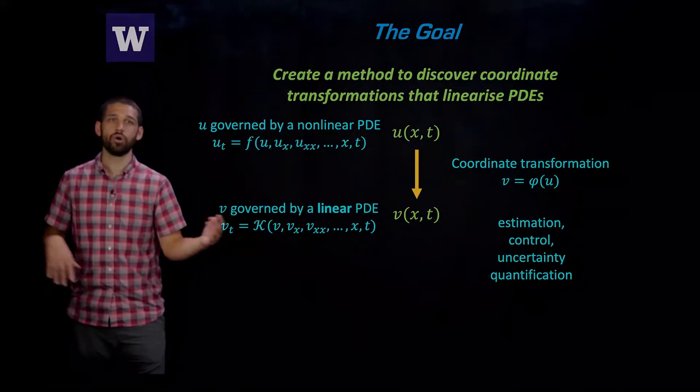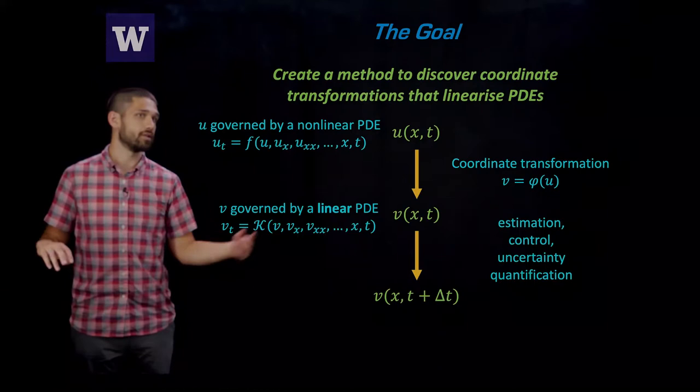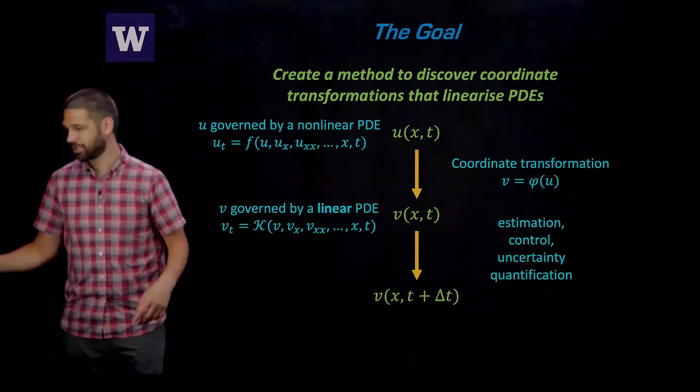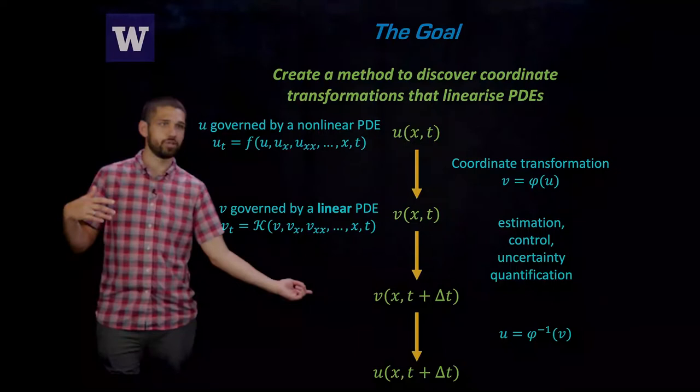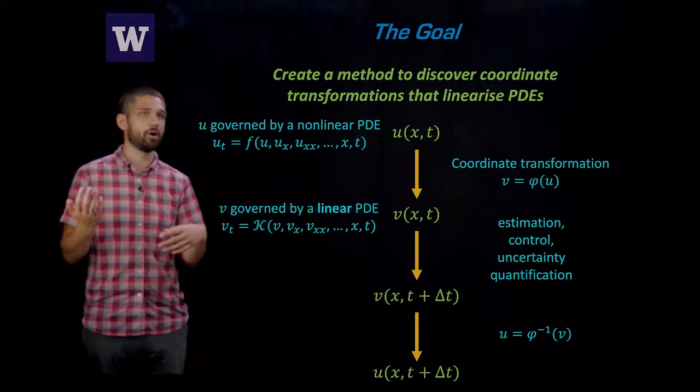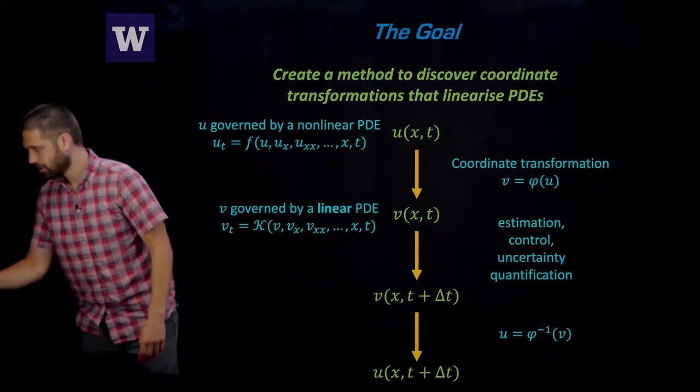We can use all of these established methods in the linear case. In particular, we also often know how to solve linear PDEs exactly. We can write down exact solutions, or we can use eigenfunction expansions. So it's easy to evolve this function V forward in time using the linear PDE. And then if we have an invertible coordinate transformation, we can actually go back and recover U at this time in the future, at T plus delta T. This gives us a method for evolving our solution to our nonlinear PDE by going through this linear space.